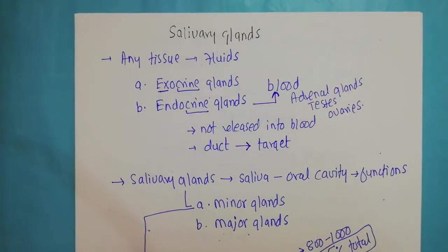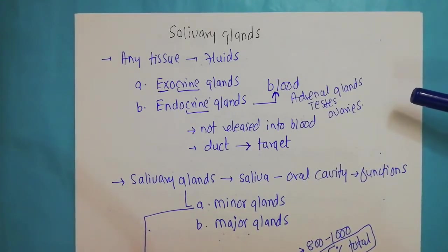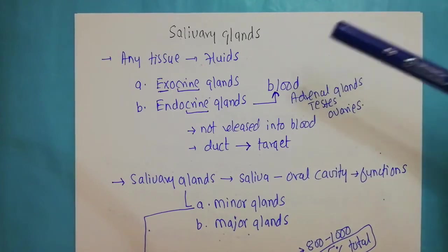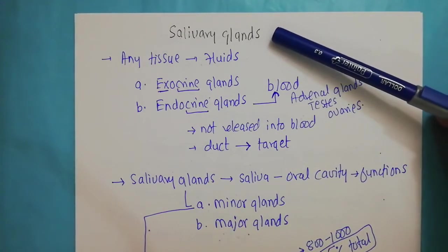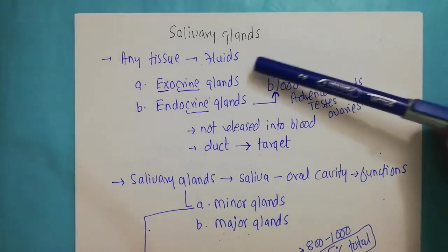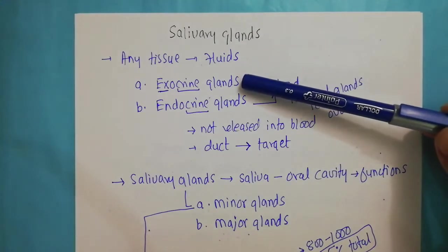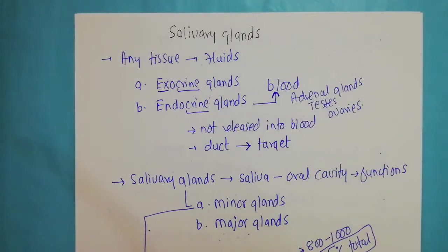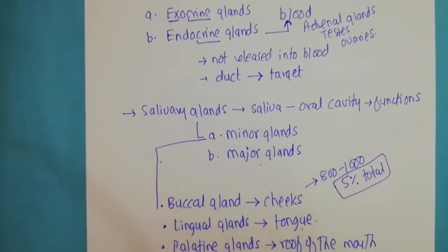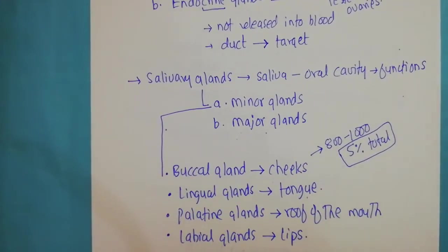Welcome back. In this video we are going to talk about the composition of the saliva. In the first part of this video I told you about the salivary gland in general — that any tissue that secretes fluid is called a gland, and there are two types: exocrine glands and endocrine glands. The salivary gland is an example of the exocrine gland.